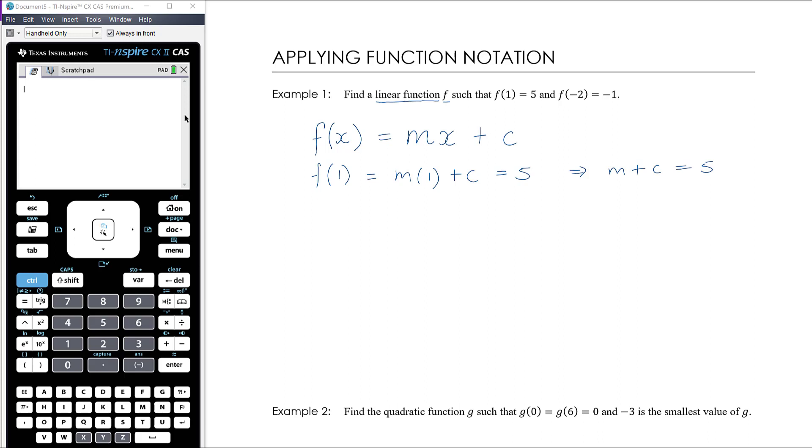We also know that f(-2), which means m times -2 plus c, is equal to -1. And so that means that we get -2m plus c equals -1. So we have two equations here: equation 1 and equation 2. We're going to solve them simultaneously.